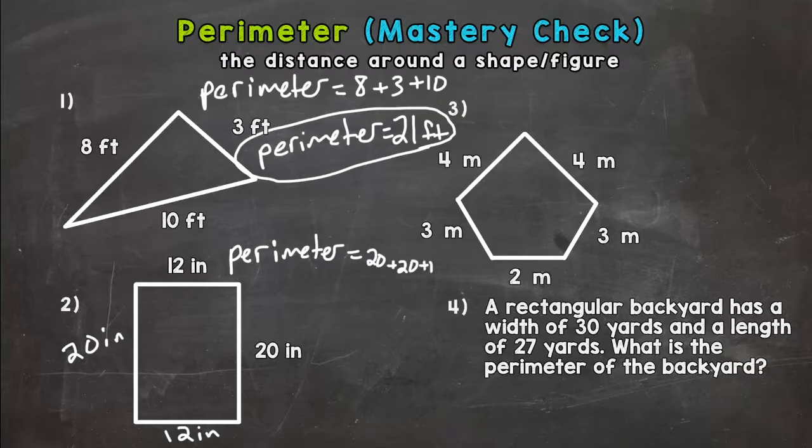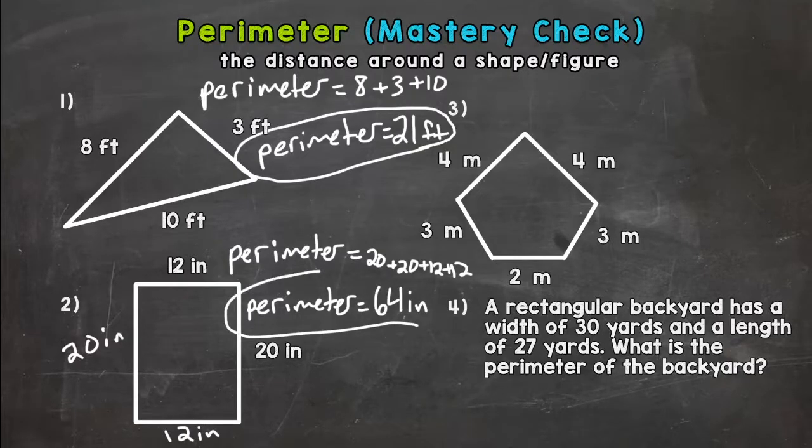Let's calculate that and add that up. 20 plus 20 is 40, plus 12 is 52, plus another 12 is 64. And our unit of measure is inches, so 64 inches. That's the distance all the way around that rectangle.